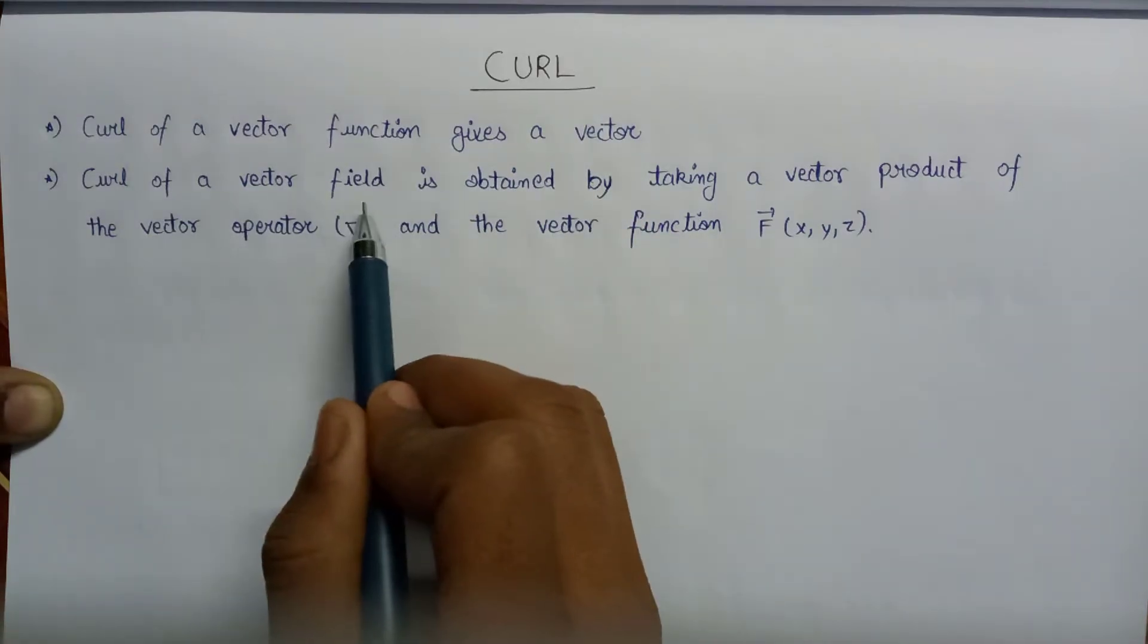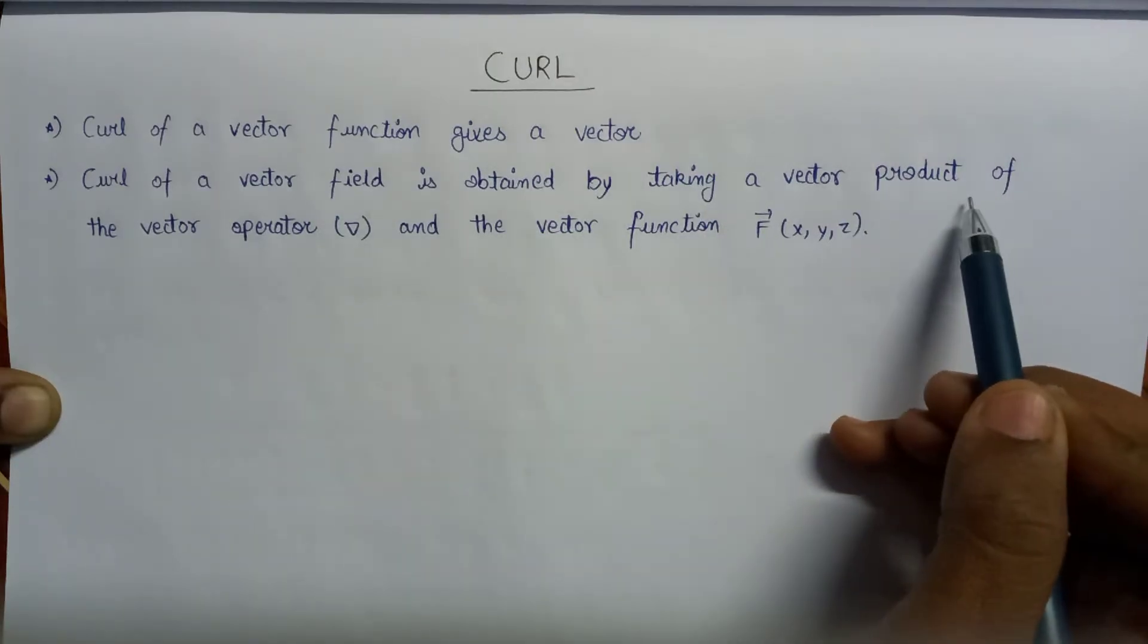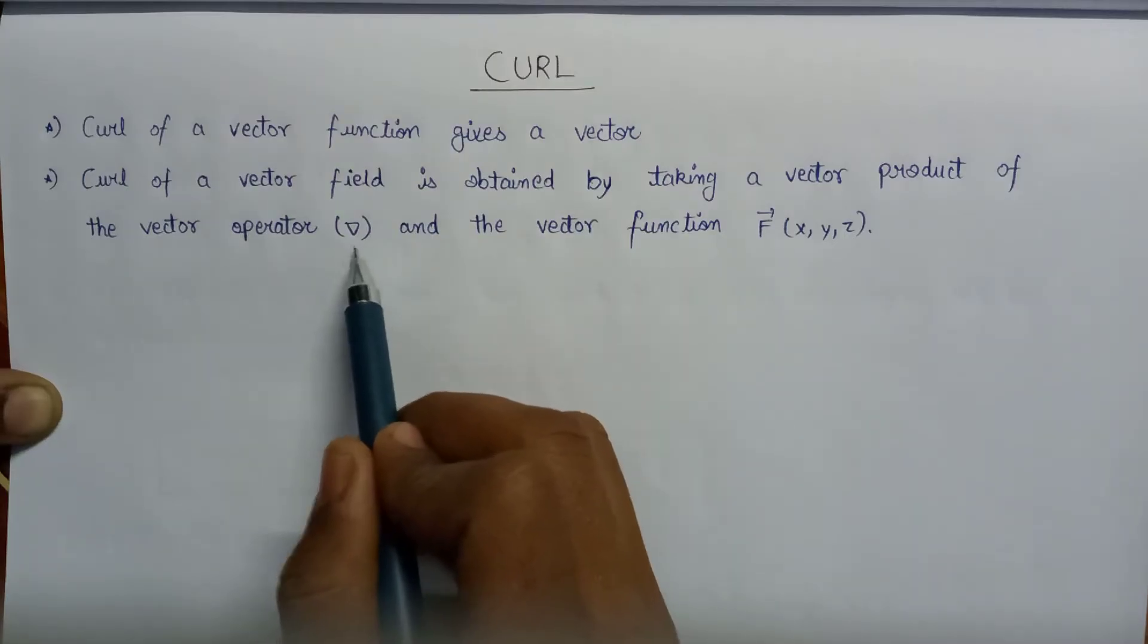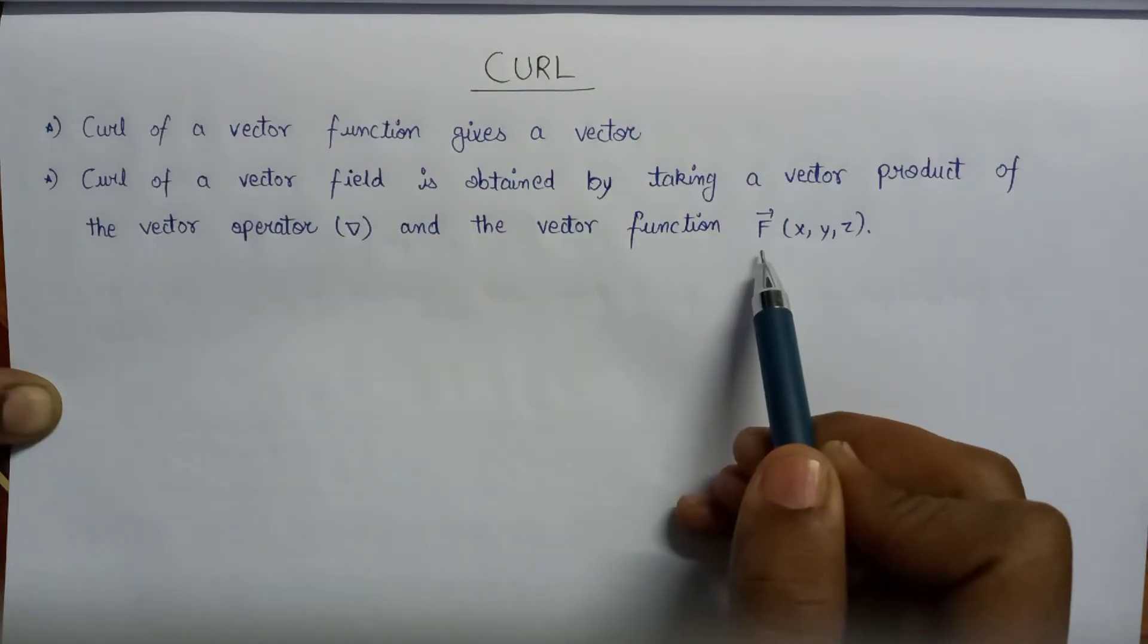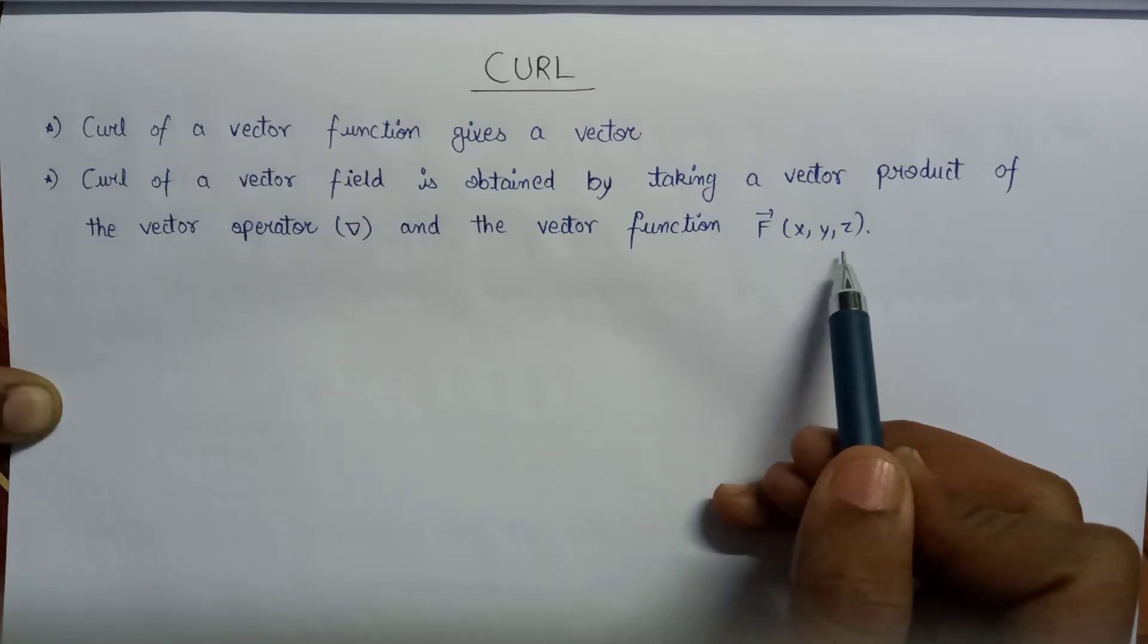Curl of a vector field is obtained by taking the vector product or cross product of the vector operator del and the vector function f vector defined in the x, y, and z coordinates.